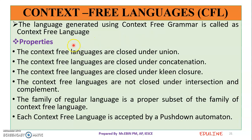There are properties of context-free languages. These include union, concatenation, and Kleene closure. However, we cannot perform intersection or complementation on context-free languages in general. Pushdown Automata will accept a context-free language. Now we are going to use the Chomsky hierarchy.